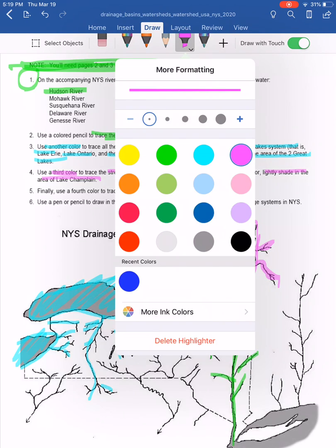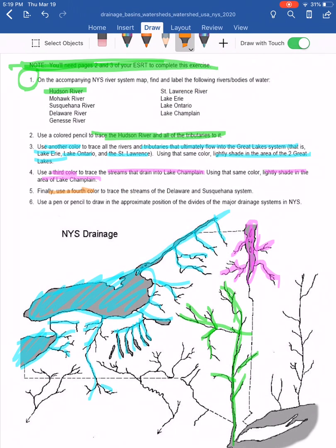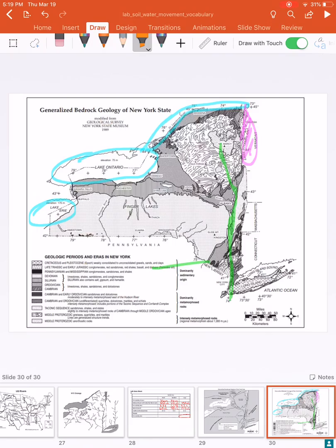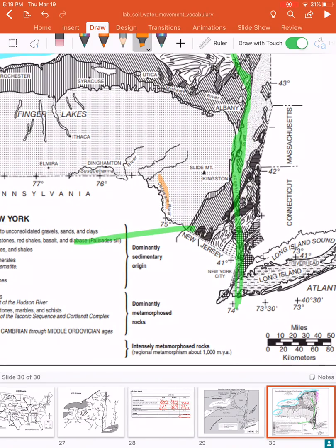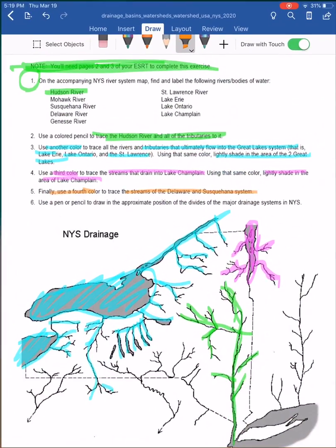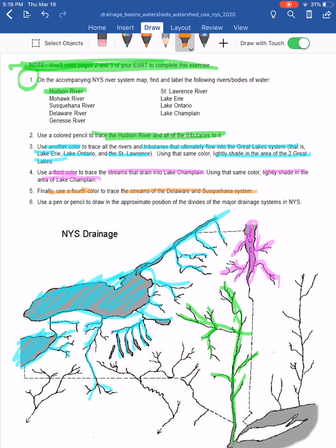For number five, use orange as the fourth color for the streams and tributaries of the Delaware and Susquehanna river systems. These are subtle and small on page three — zoom in to find them. The Delaware River is here with its accompanying streams; the Susquehanna is only briefly shown on page three but more detailed on the activity map.